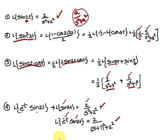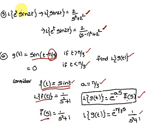Fifth problem: Laplace of e^t·sin(2t). First find Laplace of sin(2t), which is 2/(s² + 4). For Laplace of e^t·sin(2t), replace s with (s - 1). If it were e^(2t), replace s with (s - 2).